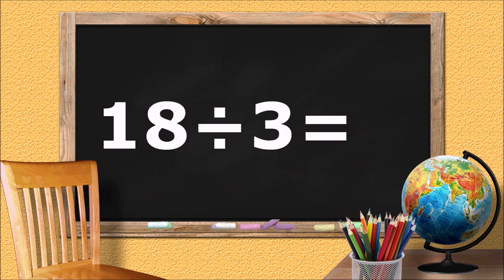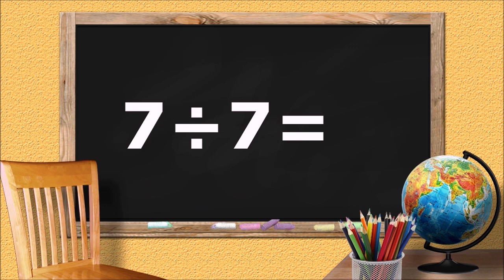18 divided by 3 equals... 6. 7 divided by 7 equals... 1.